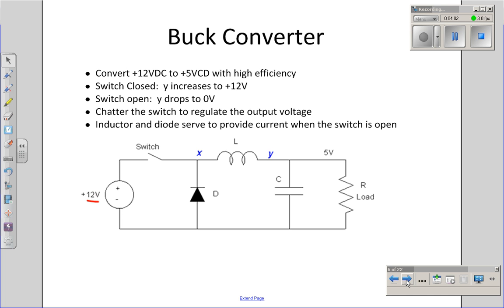Essentially, what a buck converter does, it has an inductor. What the inductor does is it stores energy in the magnetic field. The energy is 1 half Li squared. When the switch opens up, the field collapses and the inductor supplies power to the load.